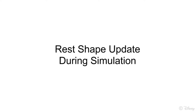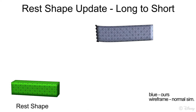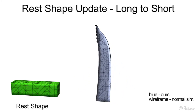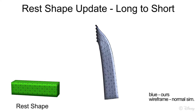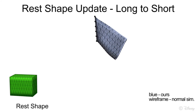One of the keys to our method is a novel approach to update the rest shape during simulation without adding unwanted forces. Here we show an example on a simple elastic bar fixed at one end. Our result is shown in blue with traditional simulation overlaid in wireframe. The rest shape is shown in green. We let the bar deform under gravity and come to rest. Then, as we change the rest shape, our method is able to accommodate the change without adding forces.